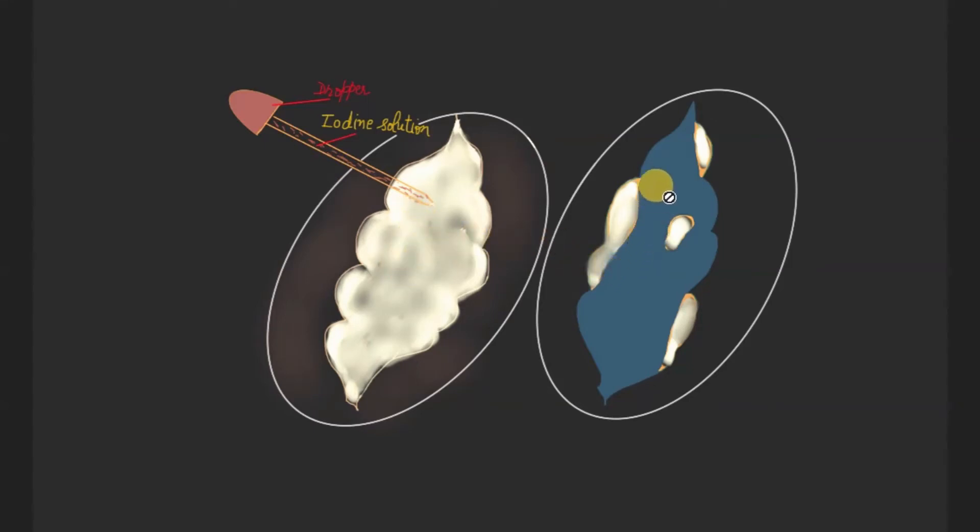What happens? We will see parts of the plant which were green in the beginning of this activity have now turned into bluish black color. Why so?